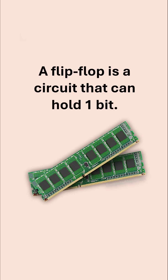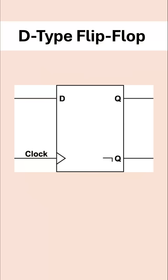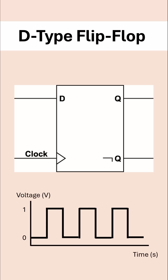There are a few types of flip-flops. The one you've got to know about is called a D-type flip-flop. We've got two inputs: D, which is your data, and the clock, which is also an input. The clock just produces a really steady signal which alternates between 0 and 1. This type of flip-flop is unique in the sense that Q, which is what it's storing, only changes when the clock is rising.